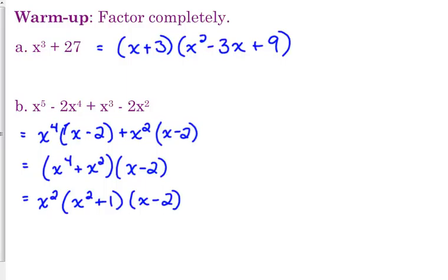So we're grouping. We bring down the two GCFs together in a set of parentheses, and we bring down the common factor, x minus 2. And then if we look at our GCFs right here, they have a GCF. x to the fourth plus x squared, you can take out an x squared and you're left with x squared plus 1. And then we'll bring out that x minus 2 on the end.